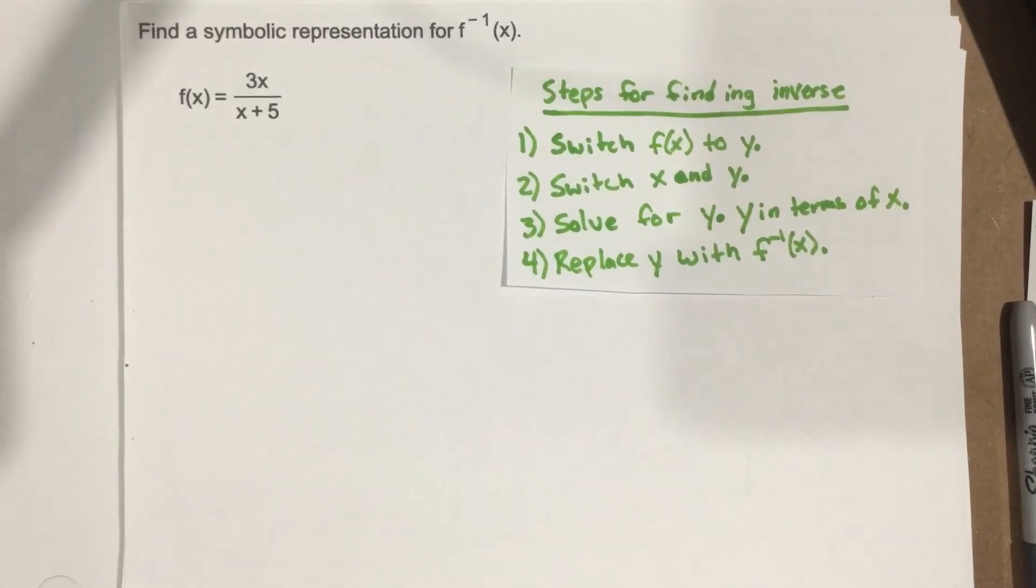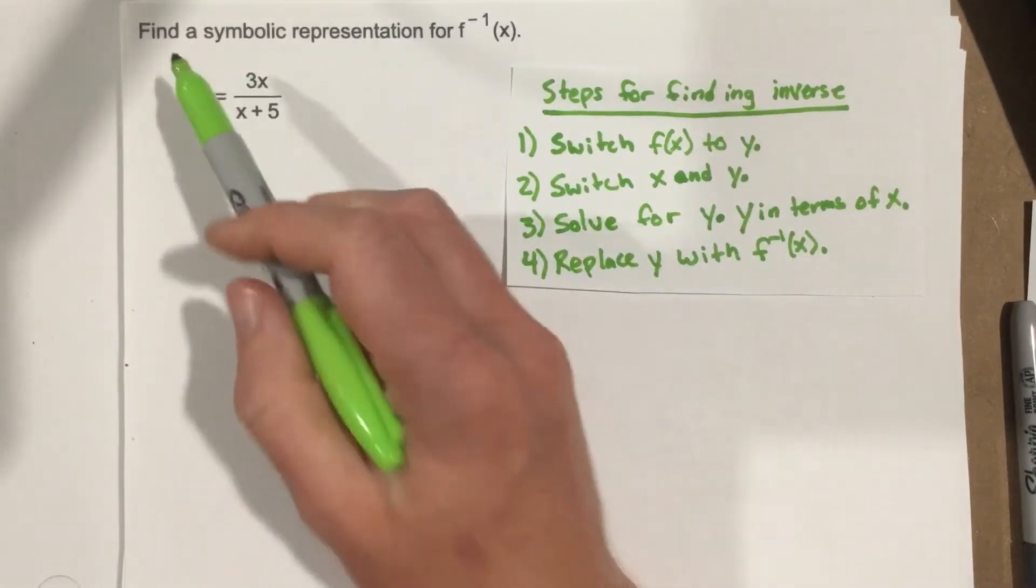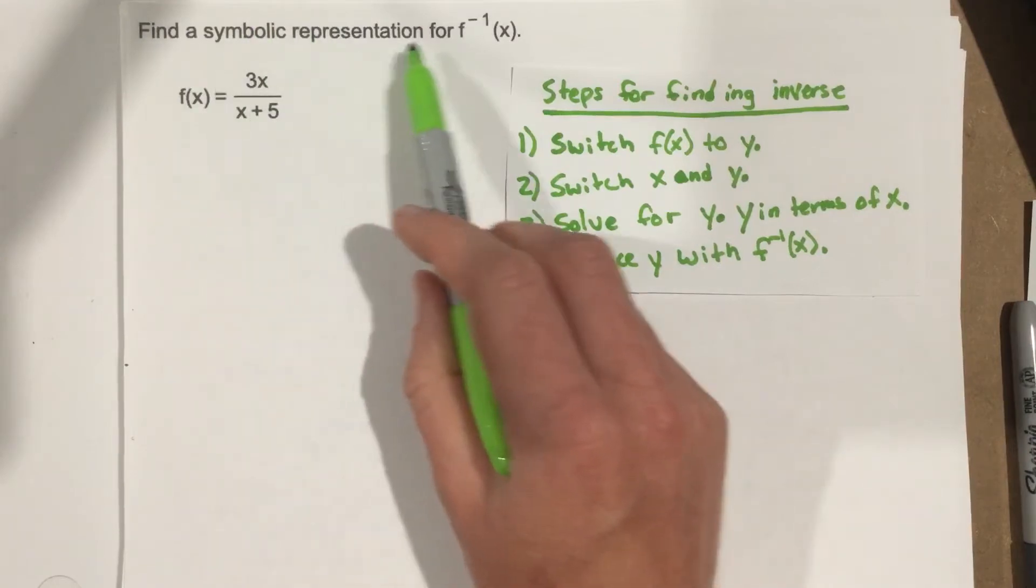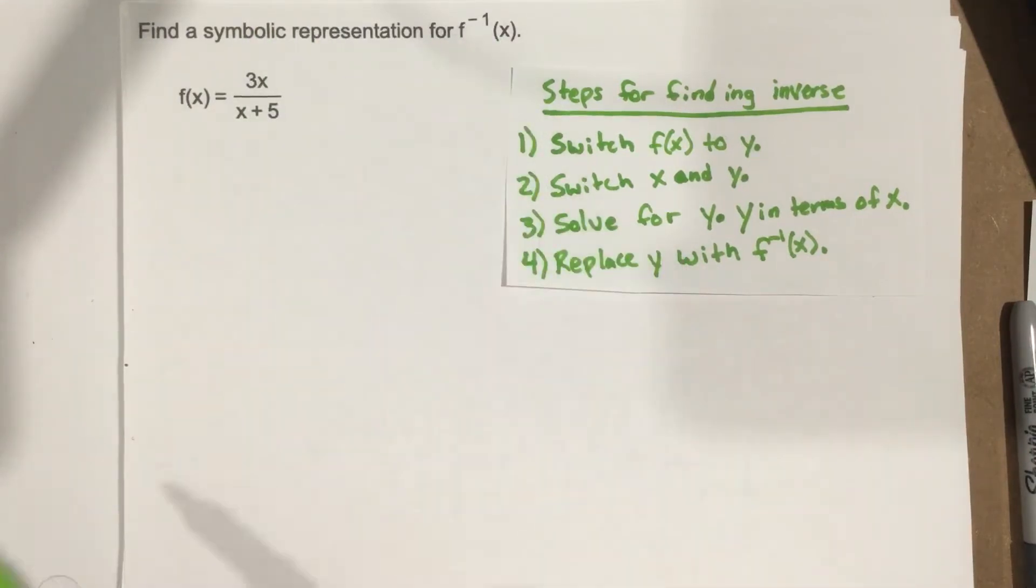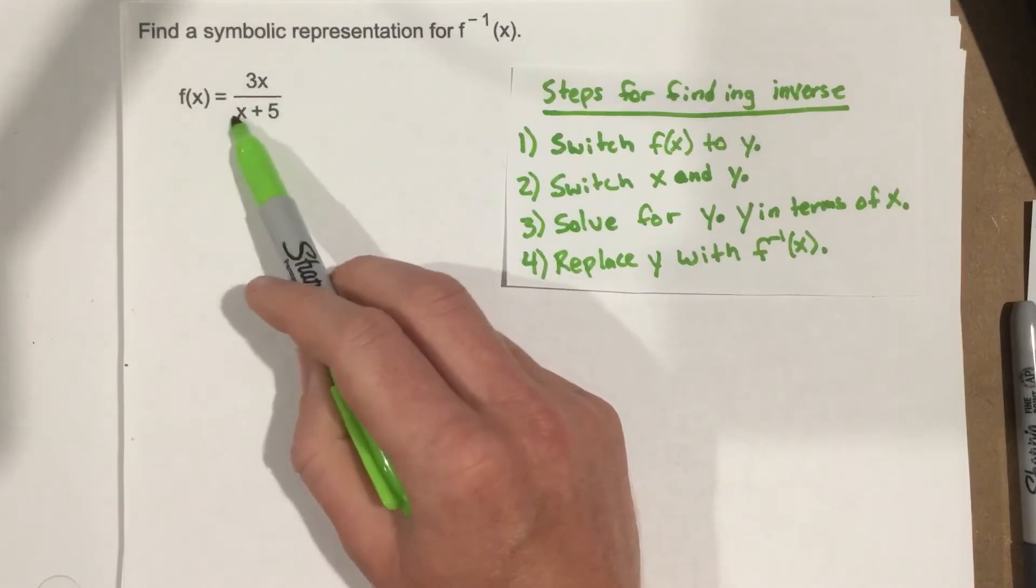This is problem number 8 from section 5.2. In this problem it says find a symbolic representation for f inverse of x. Now we have 3x over x plus 5.